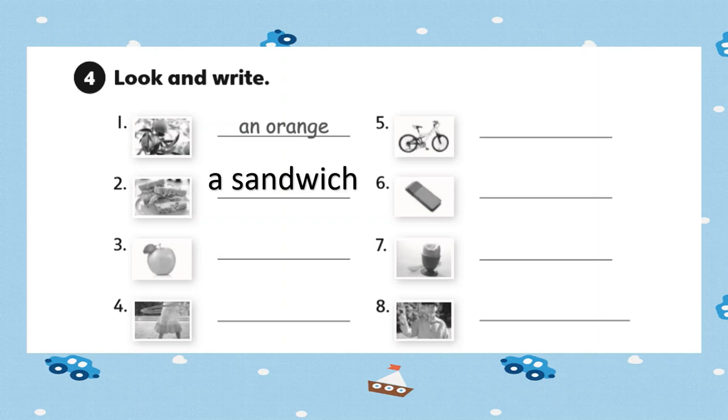Number three. Yes, it's an apple. Number four, what is it? A skirt. A skirt. And number five. A bike.